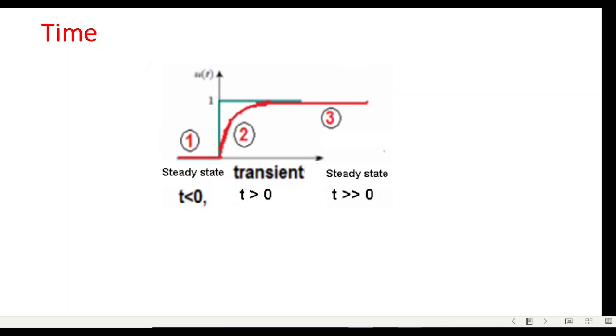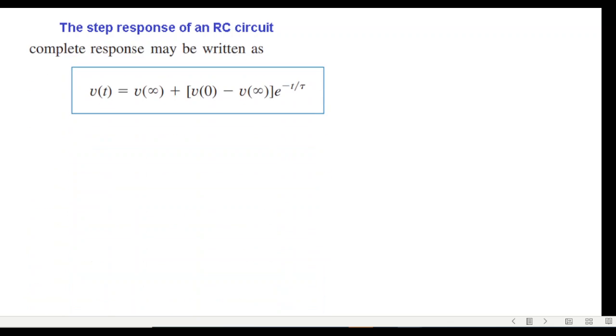After 5 tau the circuit becomes steady state, and this period will be called t much greater than 0. Now this is the formula for the output voltage at t greater than 0, and I've just copied this from the book. If you want to understand the derivation you have to go to the book, so we'll just plug in the values here.